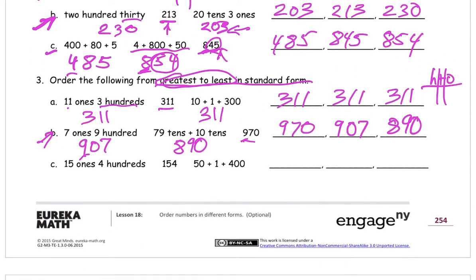And then we have our last one. 15 ones and 400s. So that's, think about your HTO chart. Right? You've got four hundreds and then 15 ones. That's the number 415. Just like that. 154. That's already in standard form. And here we have four hundreds. 50 is 5 tens and 1, 1.